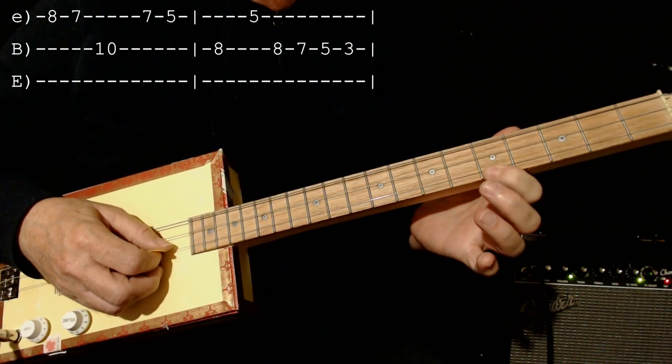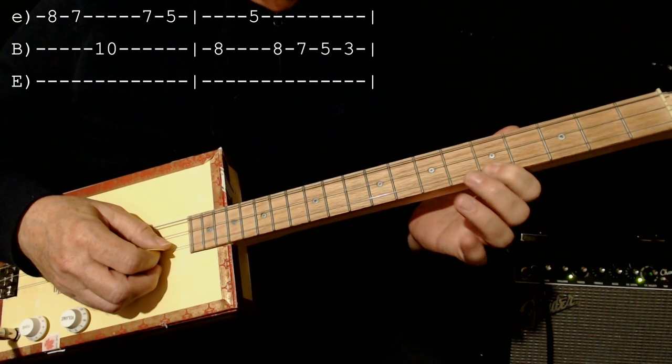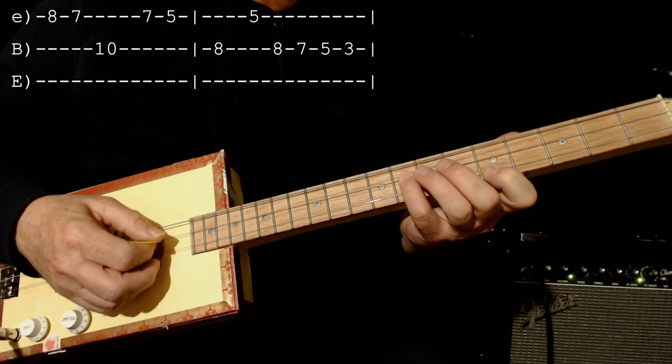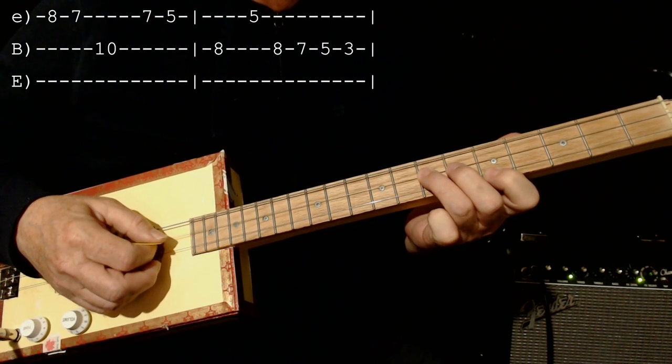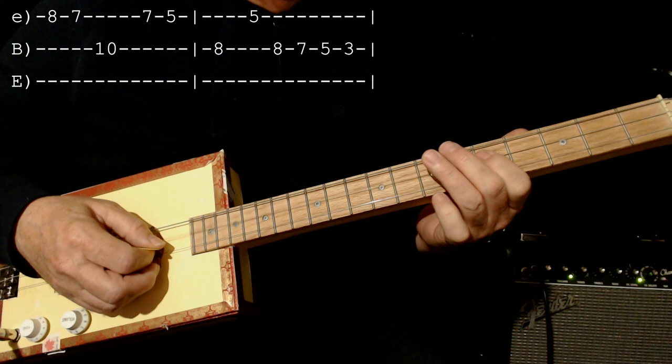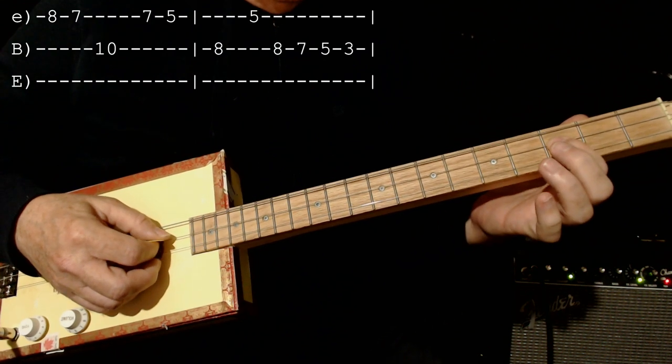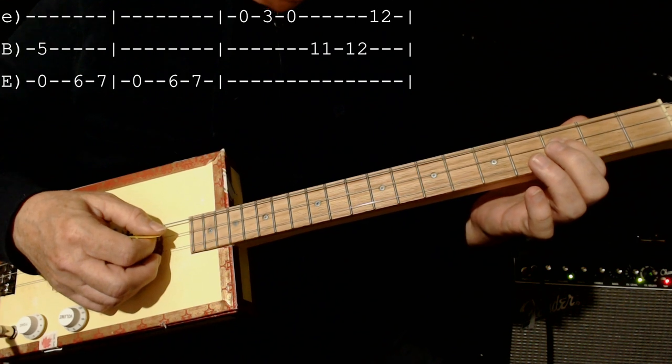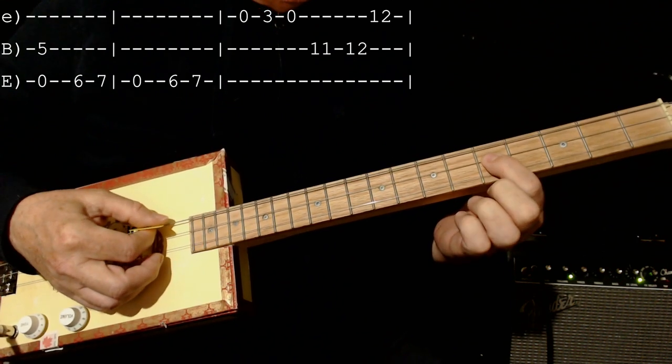Then I go back to the 5th fret on the 1st string. And then 8th fret on the middle. Then 7th fret. And then 5th fret. Then 3rd fret. And then back to 5th fret. When I hit the 5th fret, I hit it and the low string.